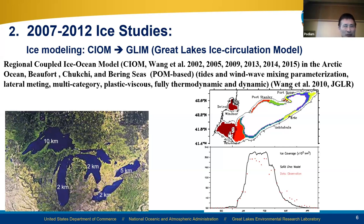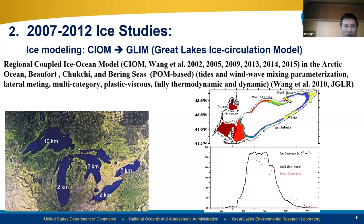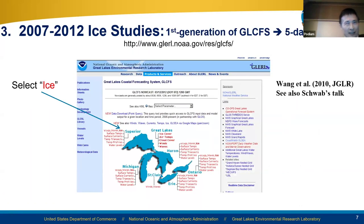Schwab had run the model for the coastal forecast system for 10 years but with no ice cover. We now added ice, and because we have an ice model we can run the model over the winter rather than resetting initial conditions every year. As you will see later, we can integrate the model for 120 years without stopping. We added ice forecasting into Schwab's GLERL Coastal Forecast System.